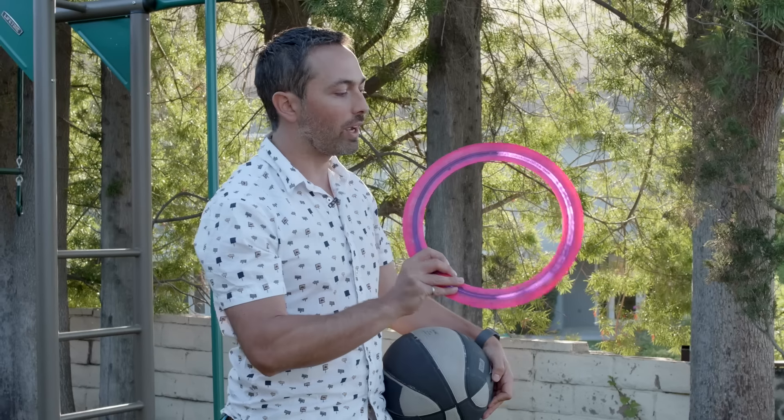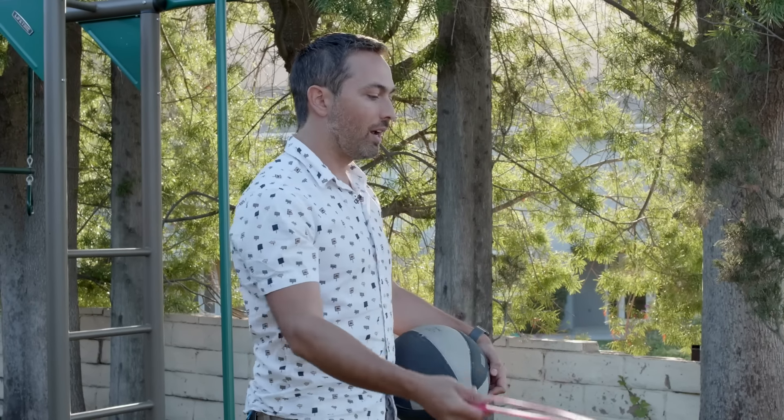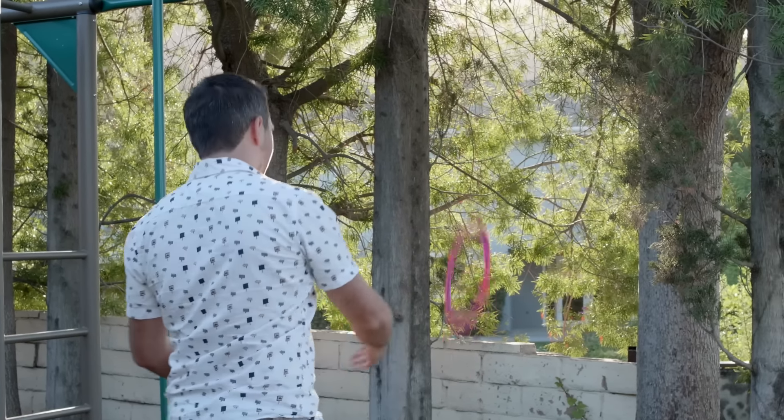And what you need to make the intermediate axis effect work is an object that has three different moments of inertia about its three principal axes. And, well, that's not every object. This object, for example, a spinning ring, has only two different moments of inertia for rotations like that, and then rotations like this.